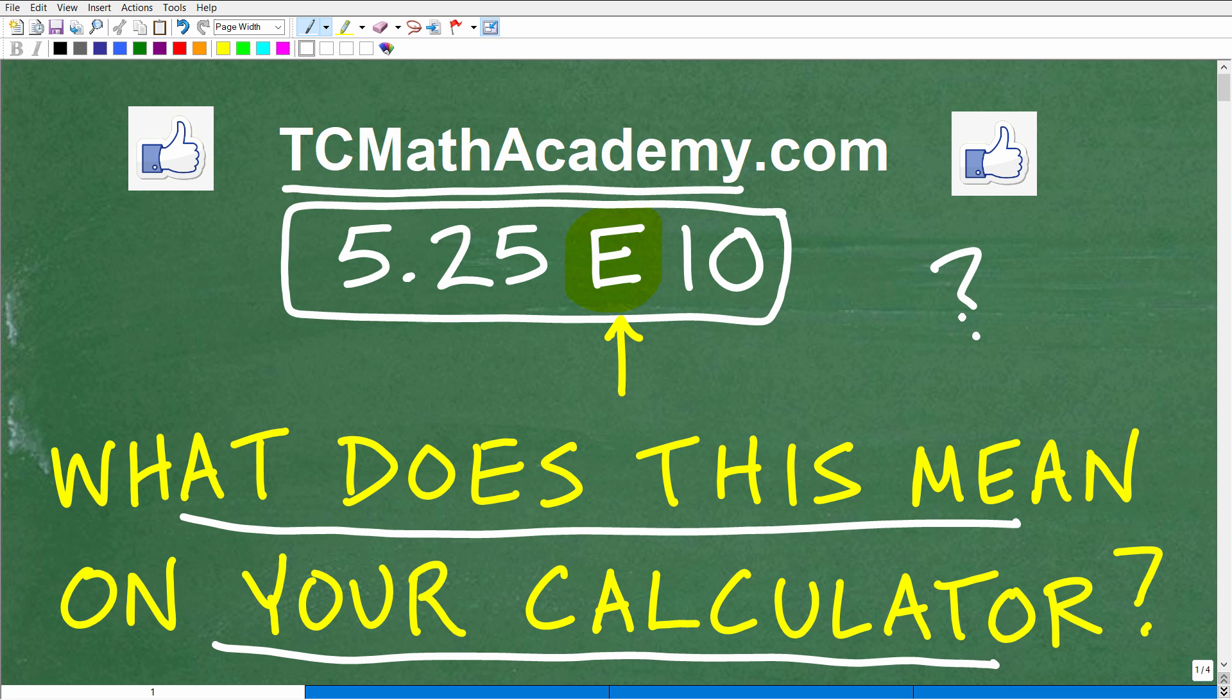I'm going to show you what this means in just one second. This all depends on what type of calculator you have, but all calculators have a limit in terms of how many digits they can show. If you need math help with the course you're taking, test prep, or homeschooling, make sure to check out my math help program at tcmathacademy.com. You can find a link in the description below. And if this video helps you out, don't forget to like and subscribe, as that definitely helps me out.